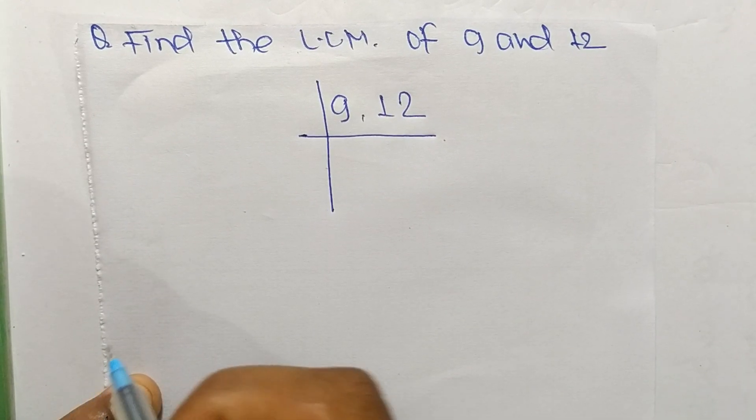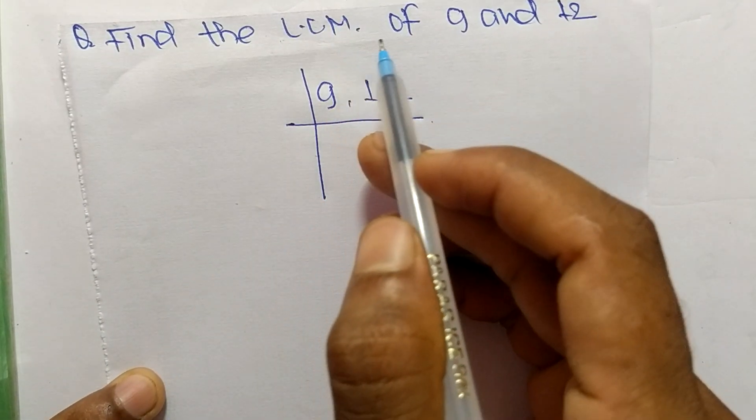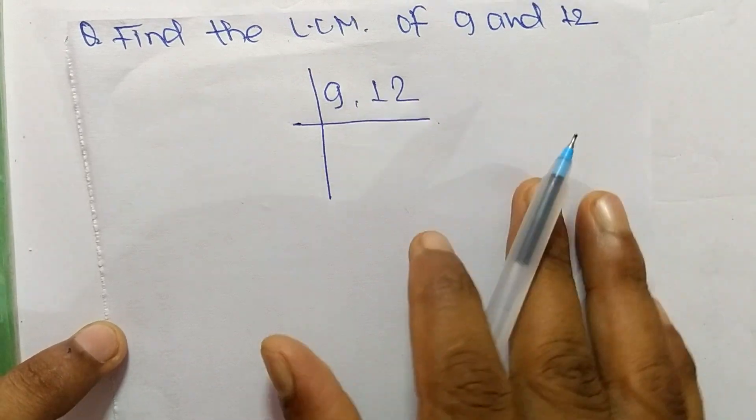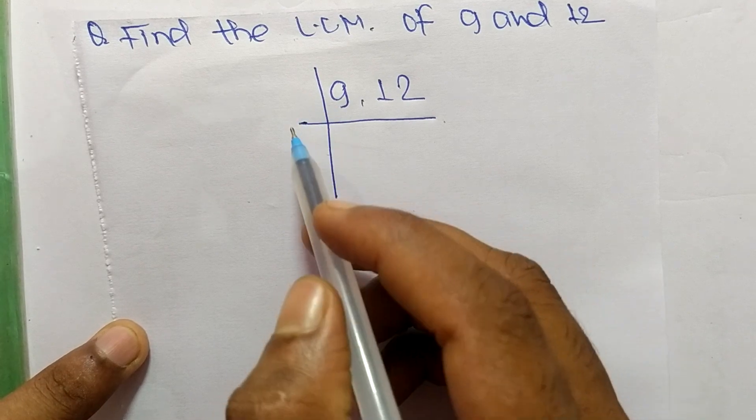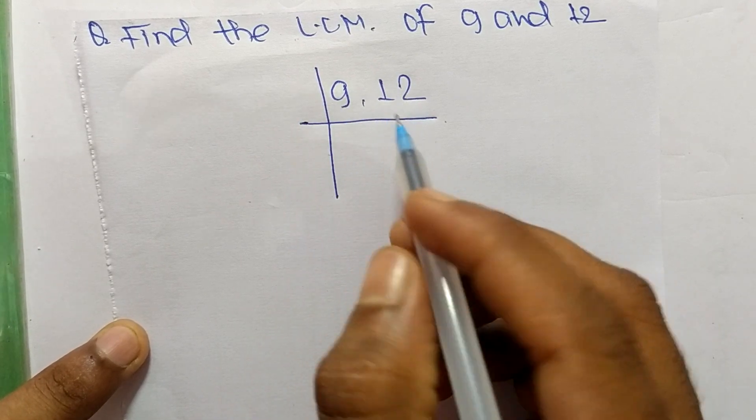Today in this video we'll learn to find the LCM of 9 and 12. First, we have to choose the lowest number which can exactly divide 9 and 12.